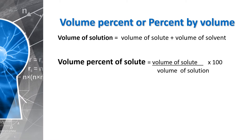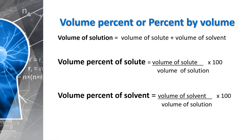The formula for getting the volume percent of solute is: volume of solute divided by volume of solution times 100. For the volume percent of solvent, the difference is that the numerator is the solvent instead of the solute — so it's volume of solvent divided by volume of solution times 100. Notice that both denominators are the same: volume of solution. The numerator can be solute or solvent, but the denominator should always be the volume of solution.